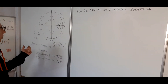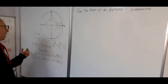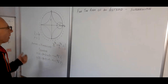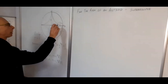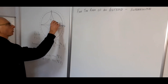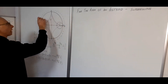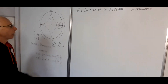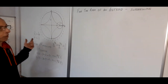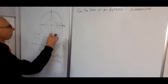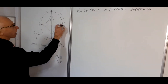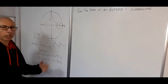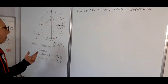An astroid is a form of hypocycloid — basically this circle is rotated inside the big circle. There are other forms where you can rotate the circle outside, and we can look into that another time.